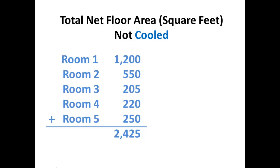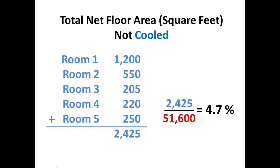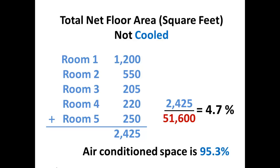We're looking at how much of those areas are not cooled. We found five rooms, added them up, and found 2,425 square feet of space that is not air conditioned. That equals 4.7%. So the space that is conditioned is 95.3%.